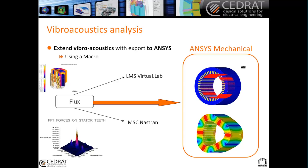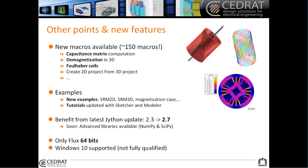We provide a full solution for Vibro Acoustics now thanks to this export. We have around 150 macros, and we added more this year: some capacitance matrix computation, which is useful instead of solving many electrostatic studies; some demagnetization in 3D; coil layouts already done thanks to a macro. You can also create a 2D project from a 3D project by doing a cut.